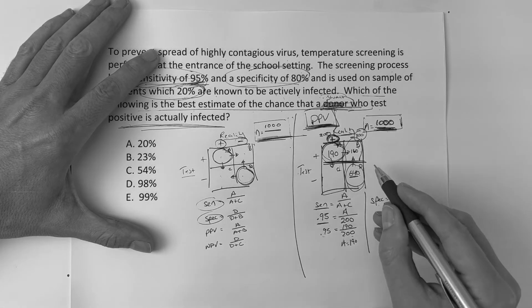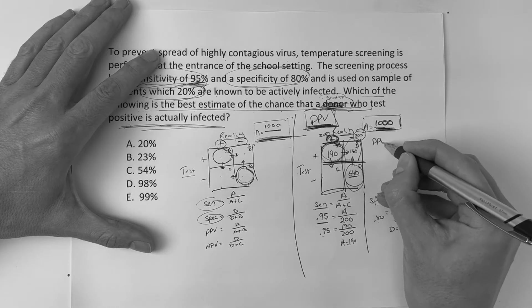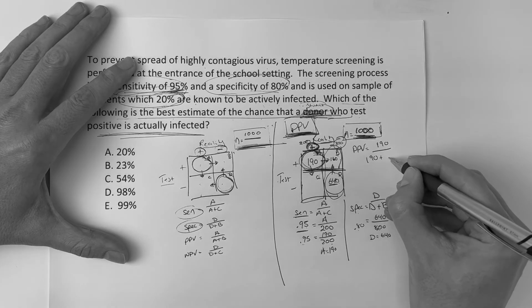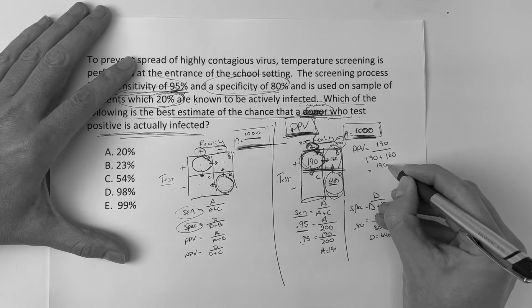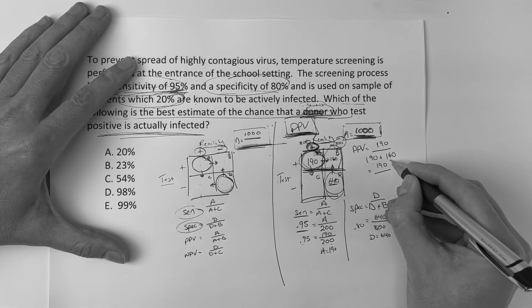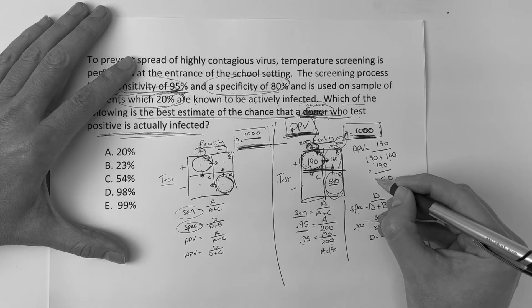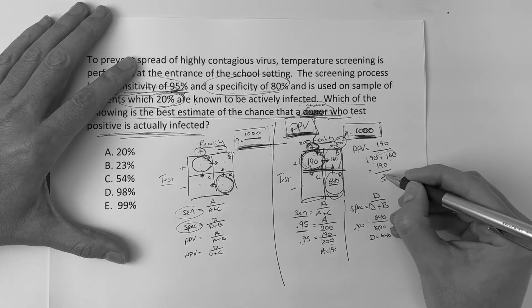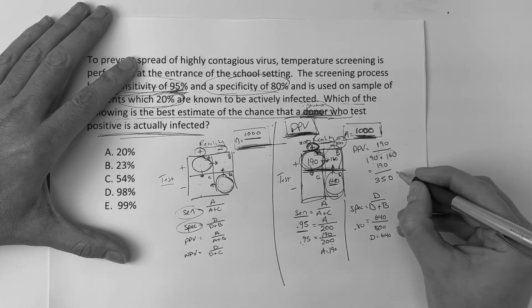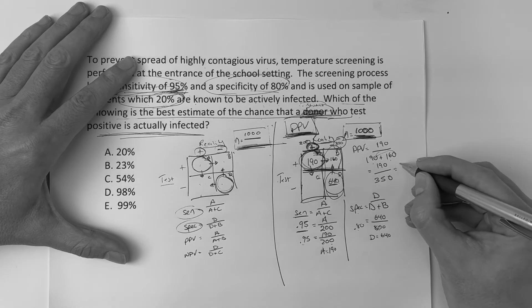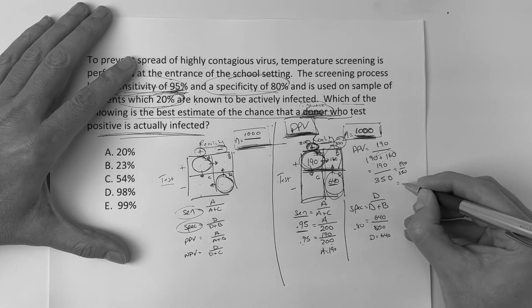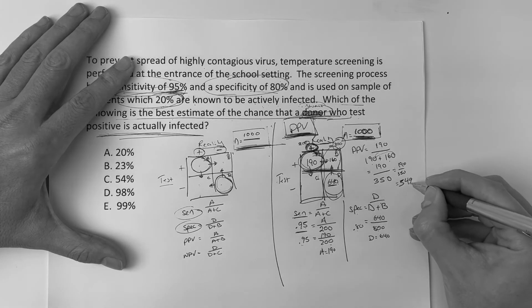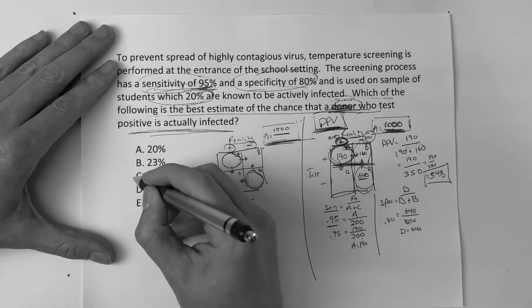So, with that being said, now I have these. Now, I can find my positive predictive value. Positive predictive value is what? Top left going to the right. So, it's 190 over 190 plus 160. And if I do that, 190 plus 160 is 350. And if I did 190 over 350, it's going to be right around 54%, okay?